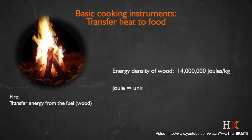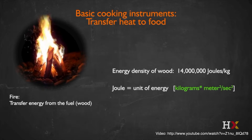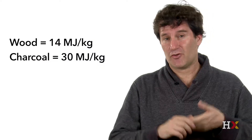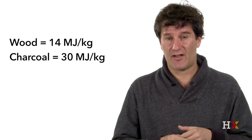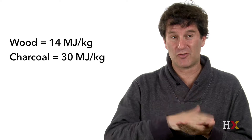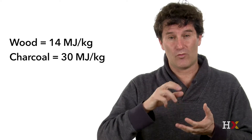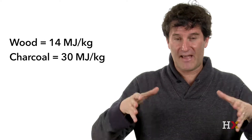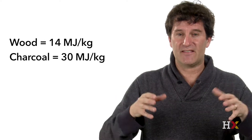Joules is an SI unit of energy, measured in kilograms times meters squared per second squared. And 14 megajoules per kilogram is the energy density of wood. Charcoal actually has a much higher energy density — about 30 megajoules per kilogram, almost a factor of two more — which explains why, if you've cooked on charcoal, you need less of it to heat the same amount of food.